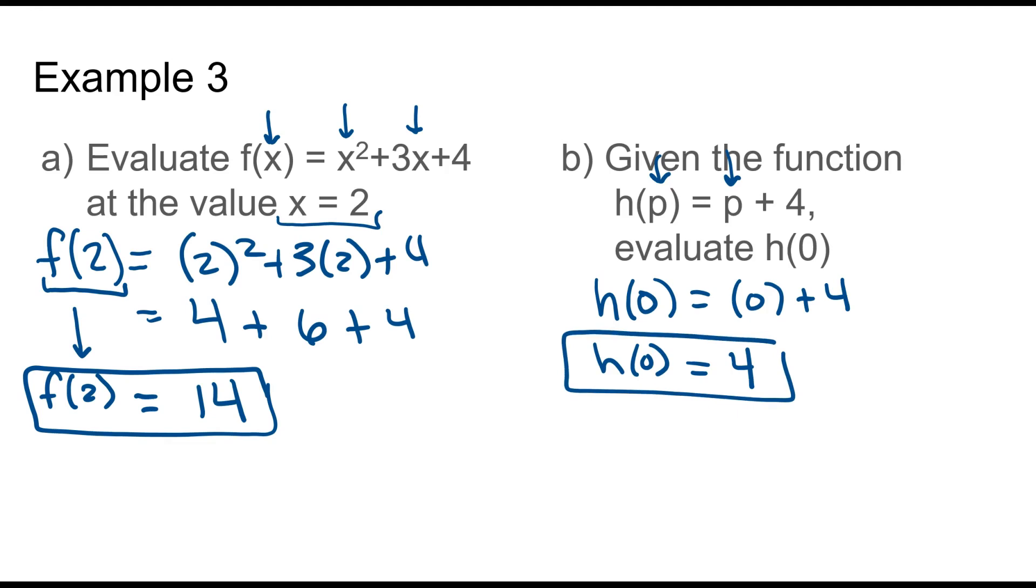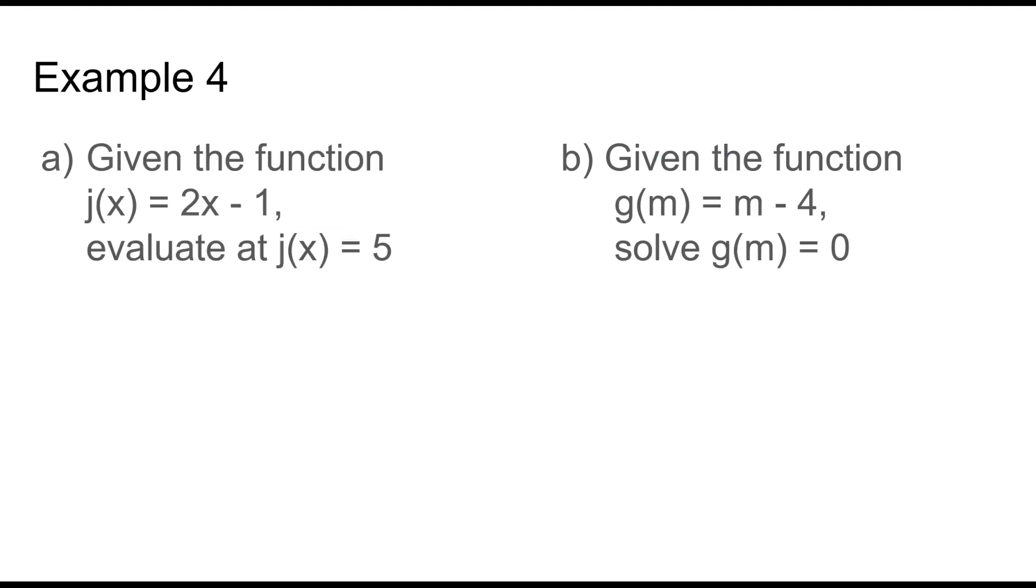We're going to do two examples that go in the opposite direction. Given the function j of x is equal to 2x minus 1, evaluate j of x is equal to 5. Really careful here. It doesn't say x equals 5. See how I'm crossing off that j? That says x equals 5. You would just plug that in there. However, that is not what that says. It says the whole function j of x equals 5. The y is 5, not the x. So how I like to handle these is rewriting the function itself.